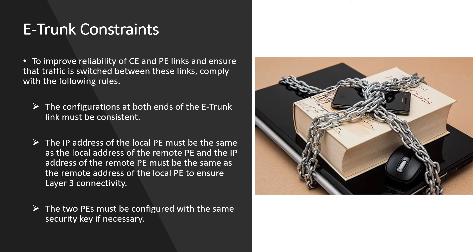The IP address of the local PE must match the local address of the remote PE, and the IP address of the remote PE must match the remote address of the local PE, to keep Layer 3 connectivity intact. It's recommended that PE addresses are configured as loopback interface addresses. Additionally, the two PEs must be configured with the same security key if required for E-trunk connectivity.